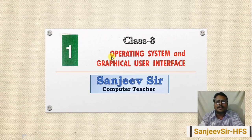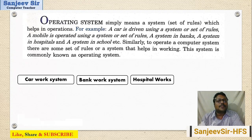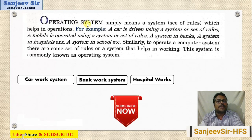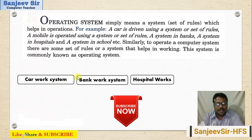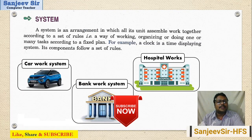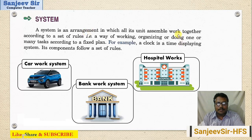Today we will start the discussion about the operating system and graphical user interface. Before explaining the operating system, we will first understand what we mean by a system. In a simple way, a system means a set of rules and set of processes through which some tasks can be defined and done. A system is that arrangement of all units assembled together according to a set of rules — a fixed and planned way of working, organizing, and doing tasks.